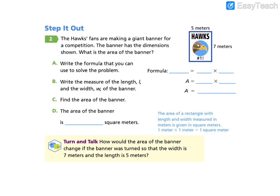Let's go ahead and do the second question. The Hawks fans are making a giant banner for a competition. The banner has the dimensions shown. What is the area of the banner? First we need to fill in the formula. Our formula is area equals length times width. So what is the length and what is the width? The length of our banner is 7 meters, and the width of our banner is 5 meters.